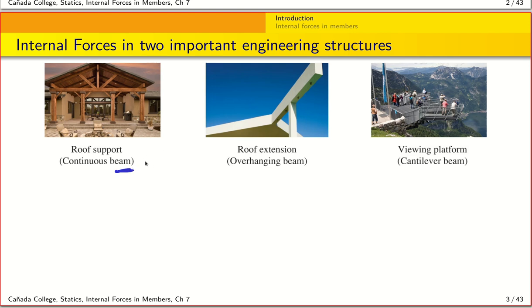As you can see from these three examples, beams are quite widely used in a variety of support systems. For example, this roof here is being supported by a beam that runs across the house. You can see such extension beams around you — some of you might have gone to the Grand Canyon and walked out onto the cantilevered ledge. These are all examples of beams.